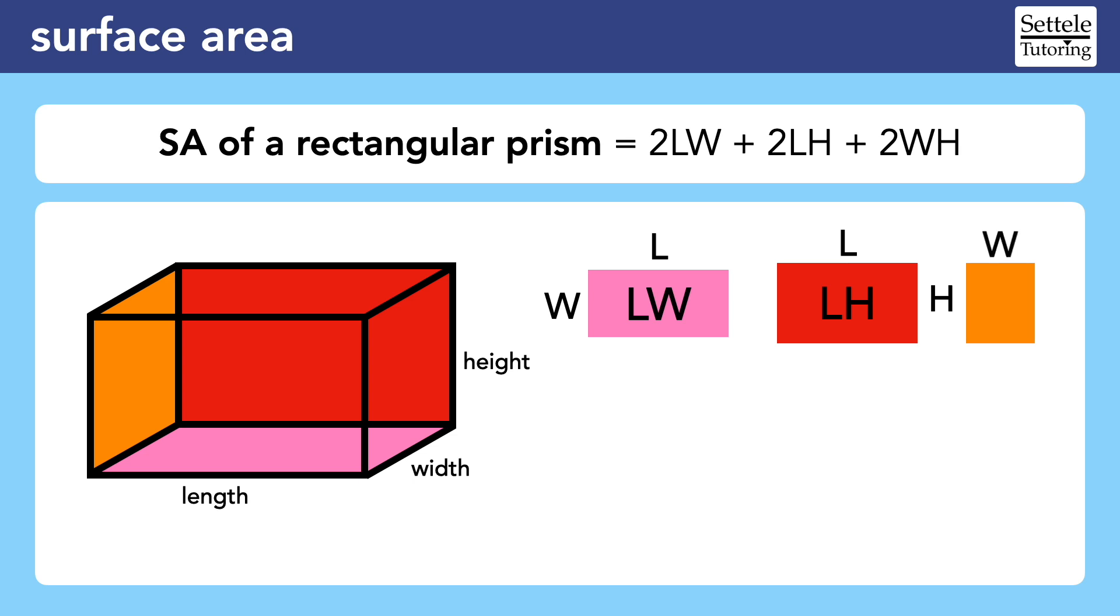The left side uses the height and width, so the area is the width times the height. Now we can see where each part of the formula comes from, and then each area is doubled because each face has a twin.